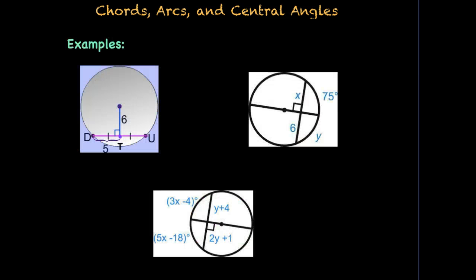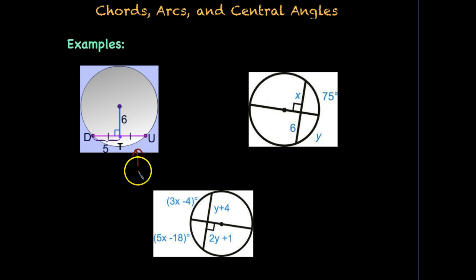We are going to use this conjecture to solve problems. In the first easy example, if DT is 5, what is TU? Because this is the perpendicular bisector, both sides are split in half, so TU is 5 as well. In the second example, the right angle confirms a perpendicular bisector. If one portion is 6, then the other is 6. The perpendicular bisector also bisects the intercepted arc, so if this arc is 75 degrees, then y equals 75.